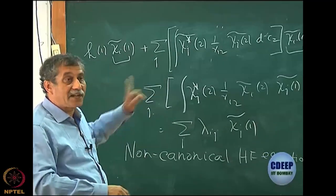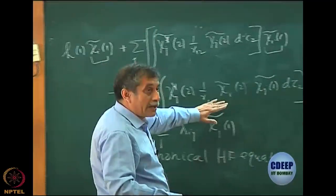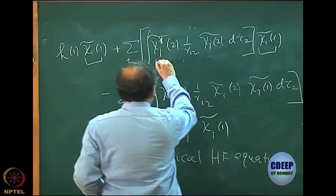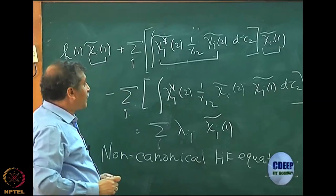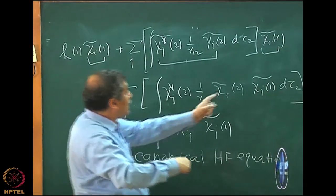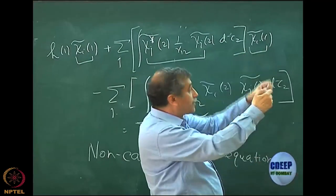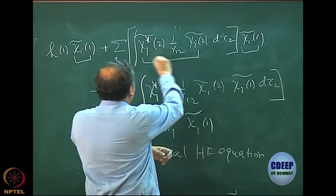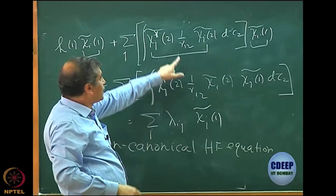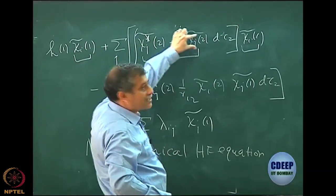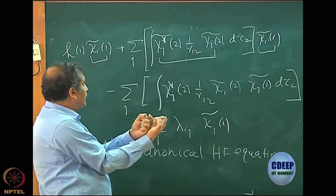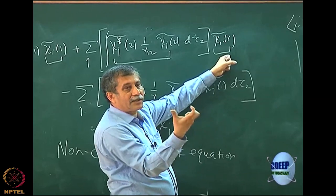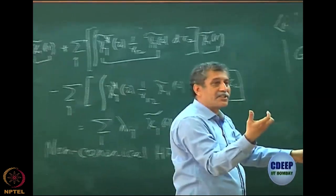This must be the minimum energy. Let us interpret what it contains. Electron 2 is sitting on chi j. I am integrating for an electron sitting in chi i. Electron 2 is sitting in chi j and giving an average interaction — one particular interaction. This is the density, remember chi j star chi j, giving an average interaction on an electron sitting with chi j. This is the classical electrostatic interpretation for the Coulomb term.